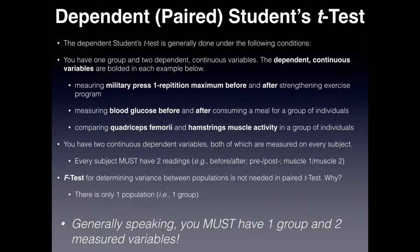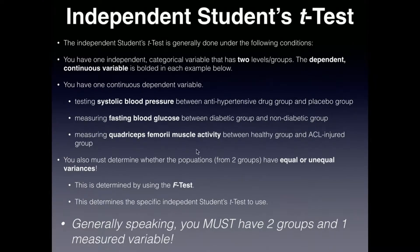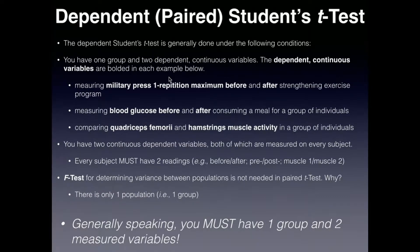The dependent t-test is basically the opposite of the independent t-test. When we looked at independent in the previous video, we had to have two different groups and we were measuring the same variable on both of them. The paired or dependent Student's t-test is the opposite of that. Instead, in simplistic terms, we only have one group but we're measuring two different variables on one group.